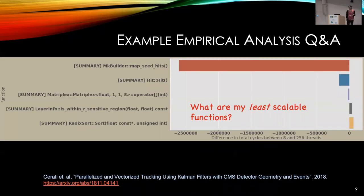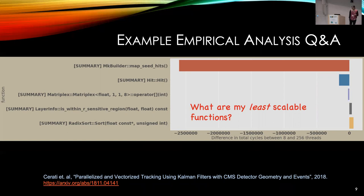Here's an example from one of the projects we're currently collaborating with. They have a medium-size C++ code using Intel TBB for parallelism. We want to find out which functions scale the worst. It's a fairly small amount of code in a Jupyter notebook to get to this kind of result. This shows that a particular function — 'map seed hits' — is the worst scaling function. As we discovered later, it wasn't parallelized at all, which explains why it doesn't scale. So this is something we started working on.